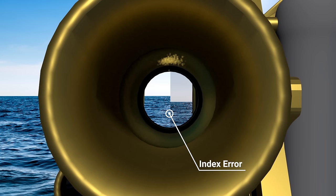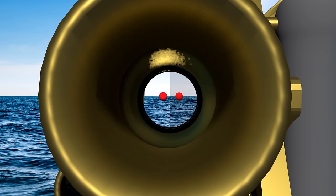This is why index error and side error need to be corrected together. If you have a sextant with both errors present, images in the telescope will be displaced both horizontally and vertically. The horizontal displacement is due to the side error and the vertical displacement is due to the index error.